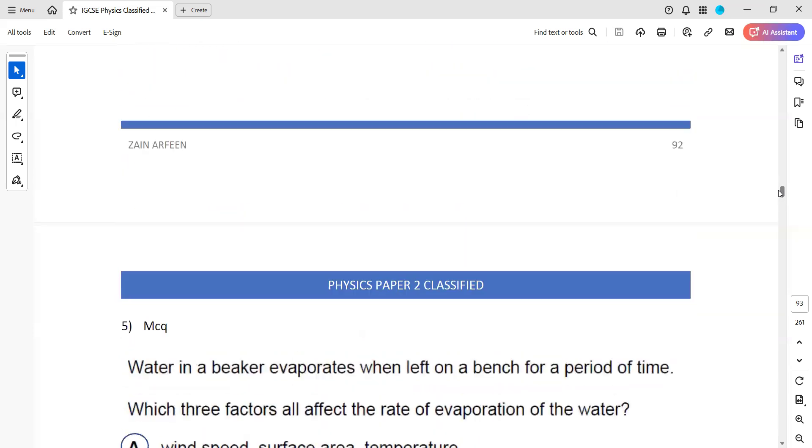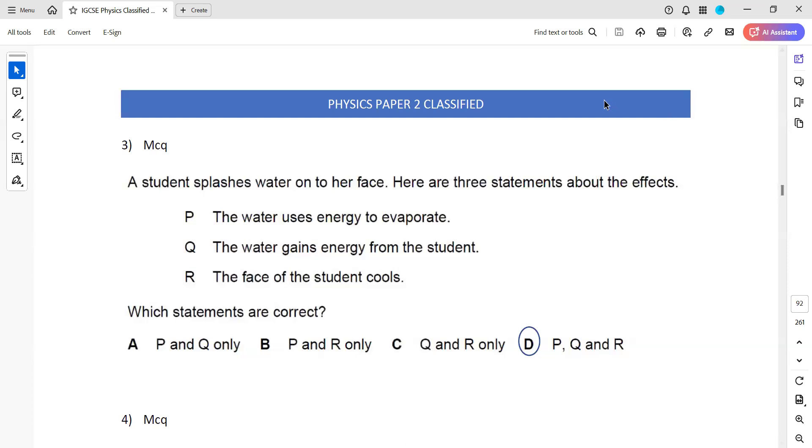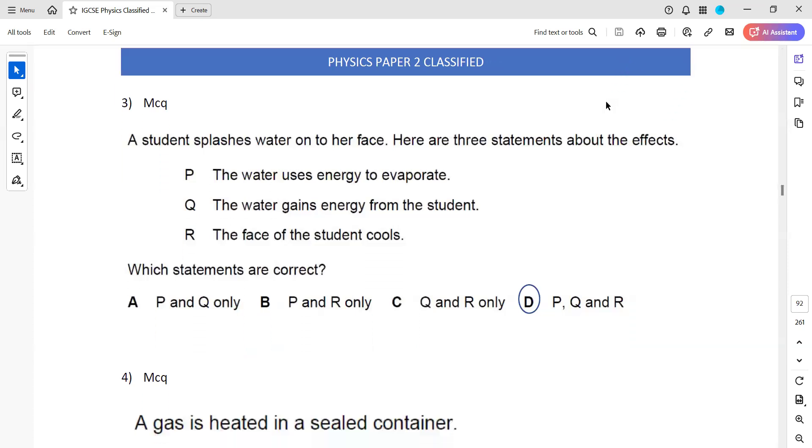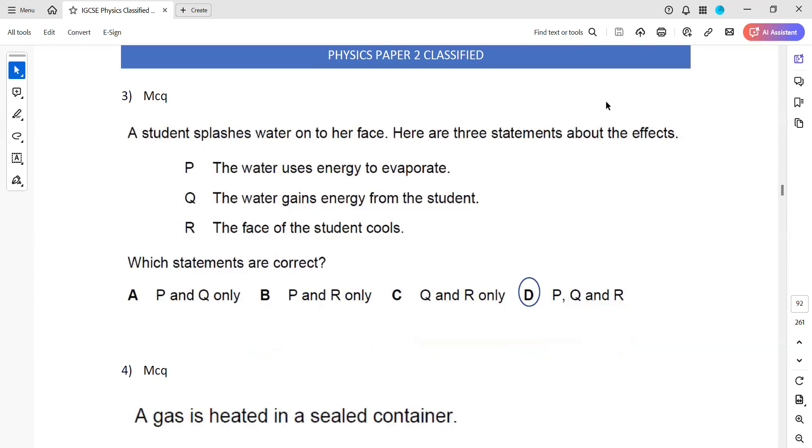Then we have question 3, which is also related to the kinetic model of matter related to solid, liquid, and gas, the gas laws, as well as evaporation. A student splashes water on her face. Here are three statements about the effect. So student splashes the water on her face and the statements, three statements are there. The water uses energy to evaporate. That's correct. From the face, the water gains energy from the student. That's also correct. And the face of the student cools. That is what happened.